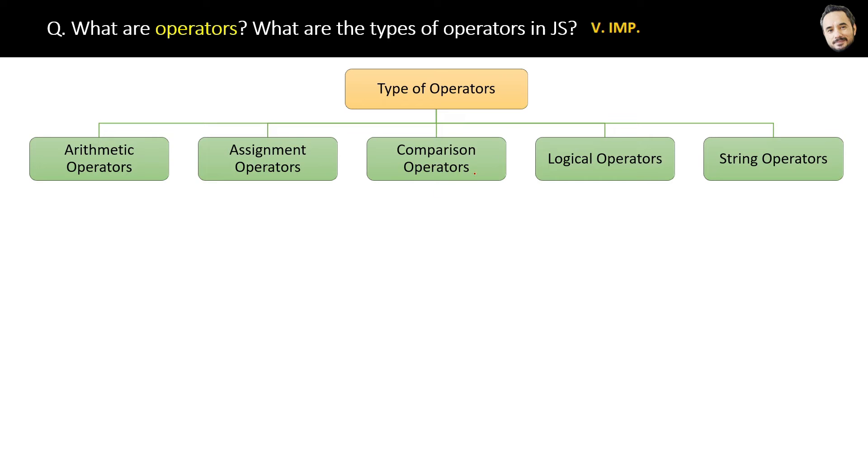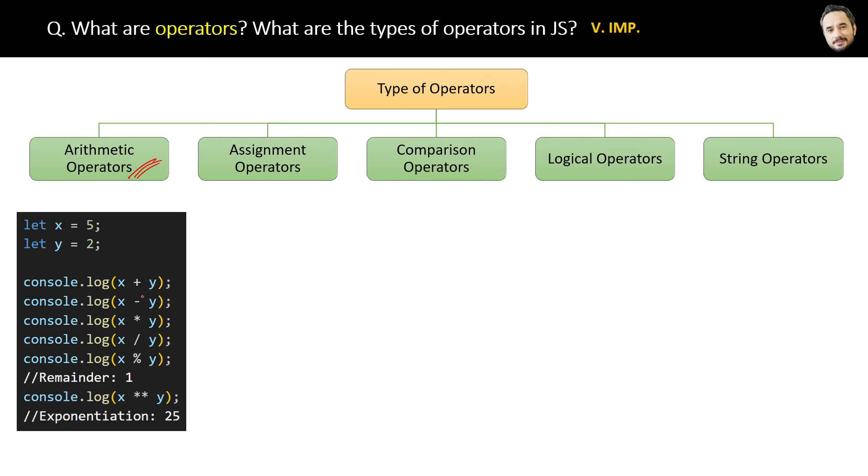Now let's see the categories and types of operators. Here are the categories of operators we have in JavaScript. The first one is arithmetic operators - this is the code and here they are. You already know all of them, right? The second one is modulo which will give the remainder, and the last one is exponential. For example, 5 raised to the power of 2 is equal to 25.